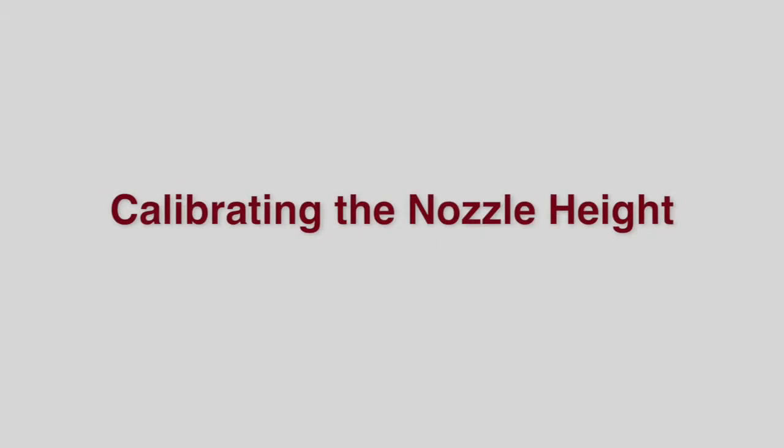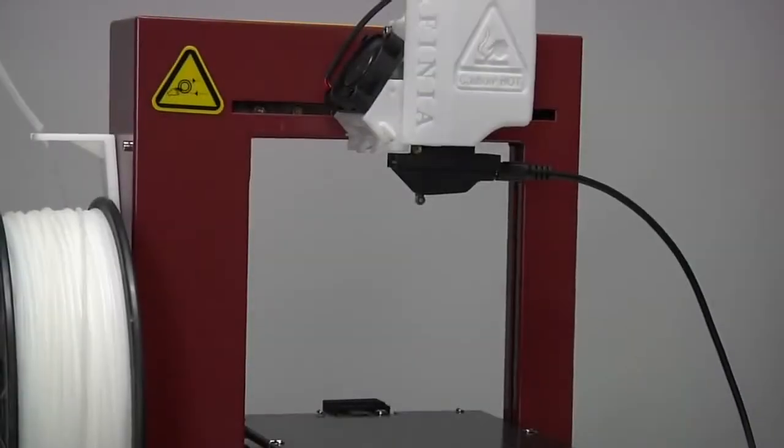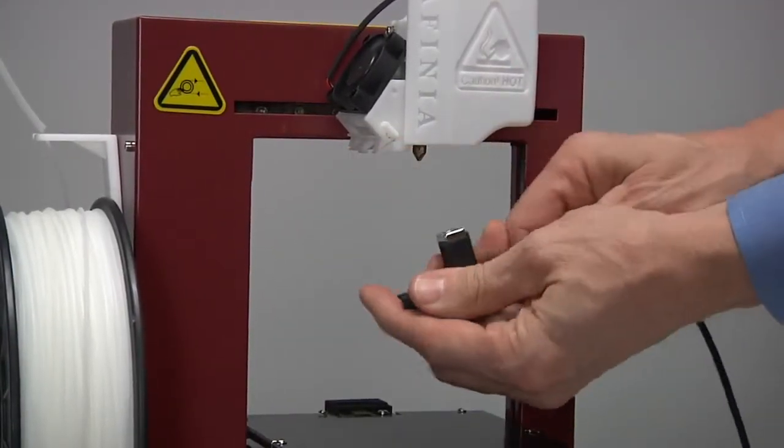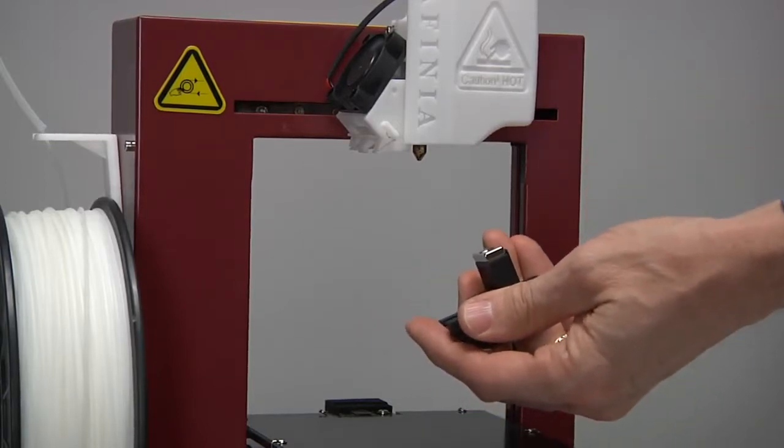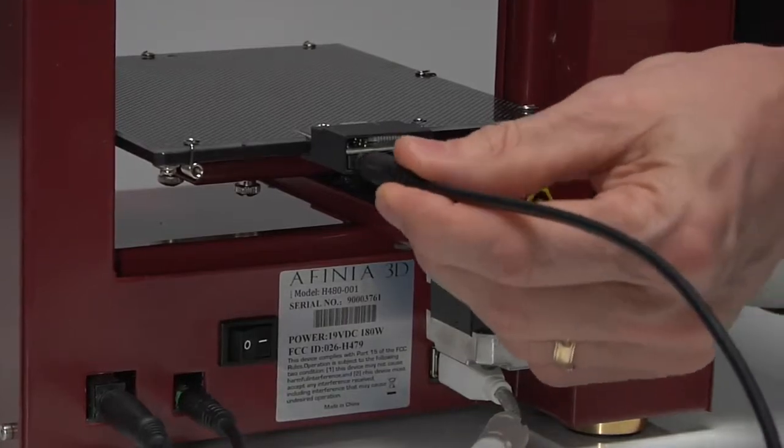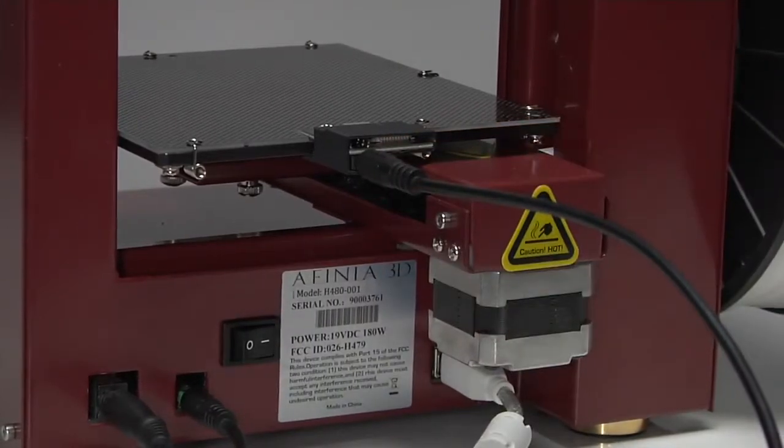Calibrating the nozzle height. The nozzle height must be calibrated prior to printing to ensure it's the correct distance from the platform. Remove the platform calibration probe from the extruder head and disconnect the data cable from the probe. Plug the data cable into the connection on the back of the nozzle probe positioned at the rear of the platform.